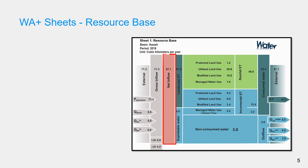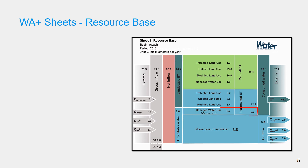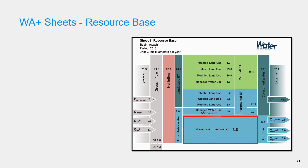The net inflow represents the net amount of water available for consumption. This net inflow will partly be consumed by landscape evapotranspiration and partly be available for exploitation. Part of the exploitable water will be consumed by incremental evapotranspiration of managed water uses such as irrigation, and the remaining, if any, will be considered as non-consumed water.